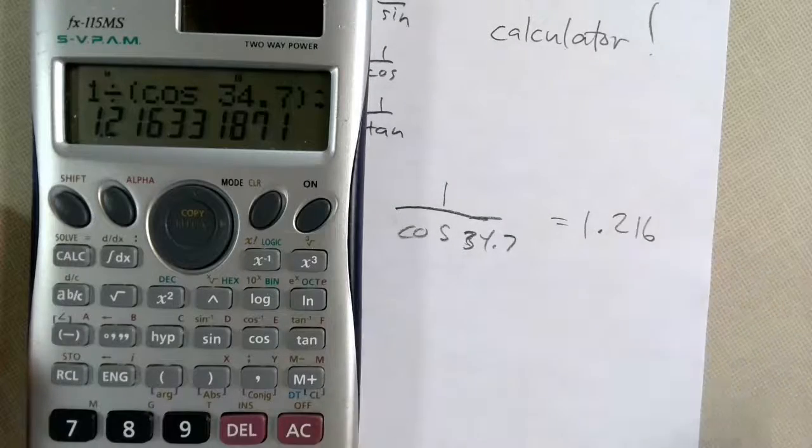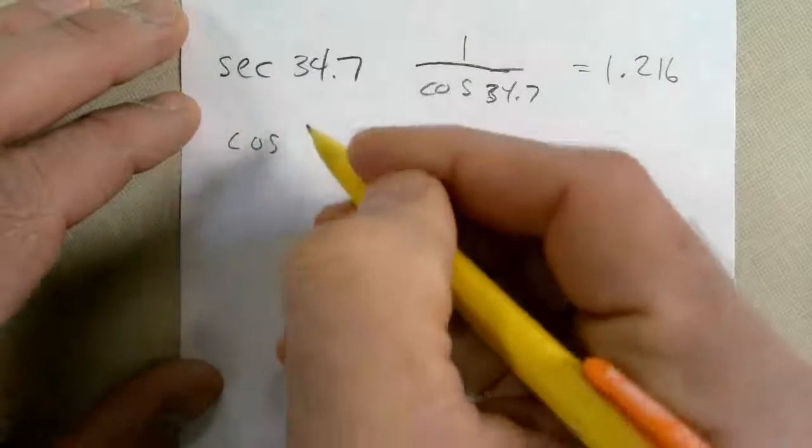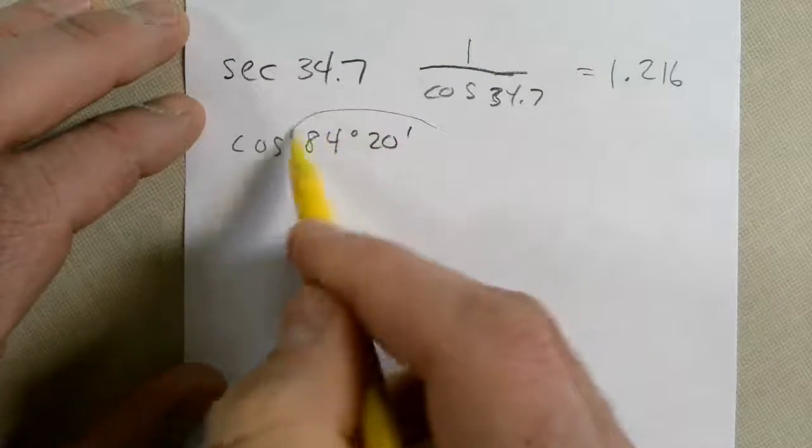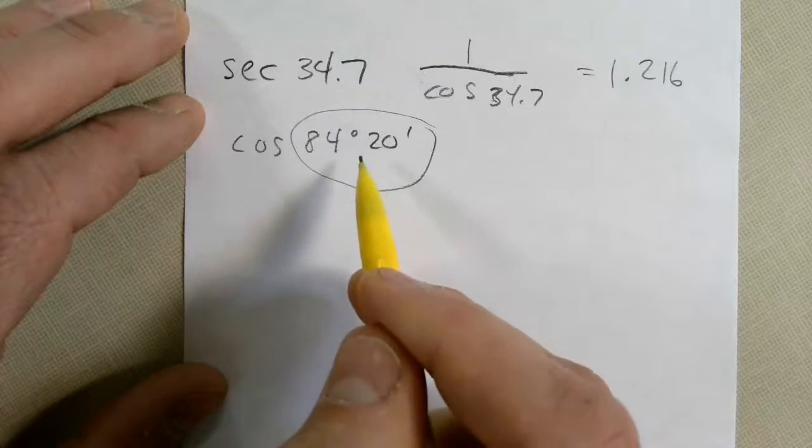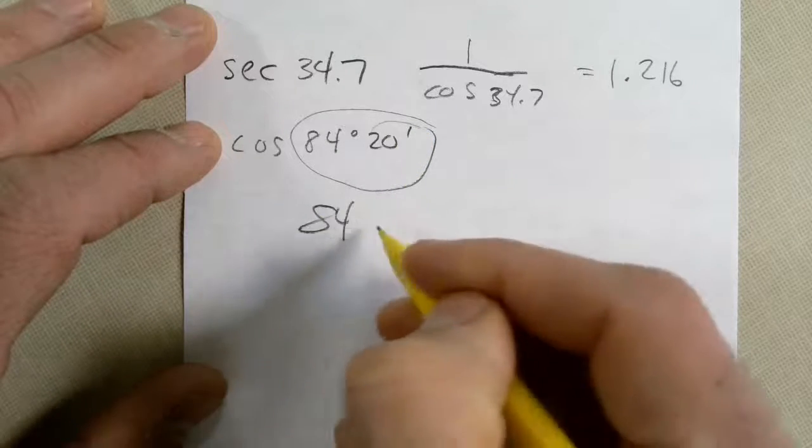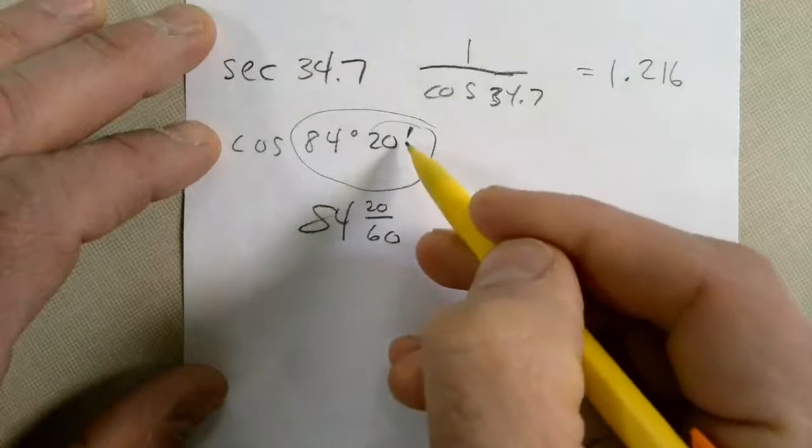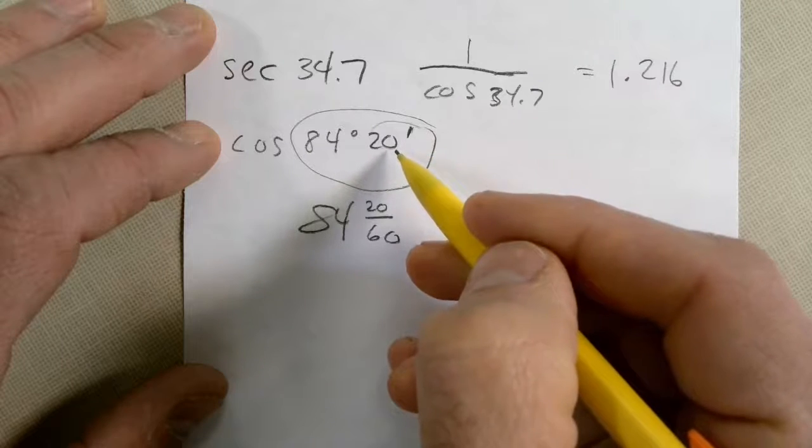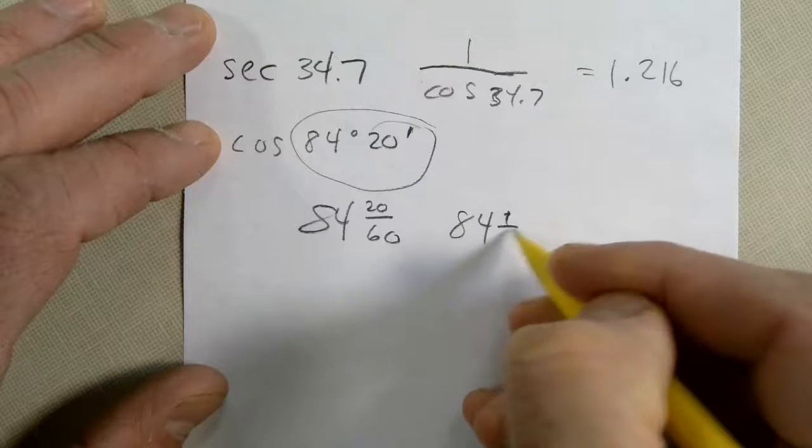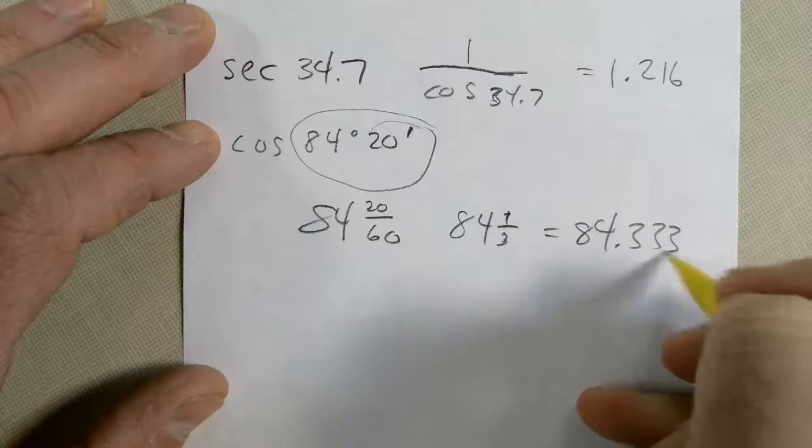So, you're just going to be plugging in numbers. Not too bad. Now, a little complication. What happens if they ask you to give the cosine of 84 degrees in 20 minutes? Well, you'll have to convert this into a decimal first. Remember, this is a fractional number. So, 84 and 20 sixtieths. Because, remember, minutes are 60 minutes to a degree. So, this is 84 and one-third. And you can divide one-third on your calculator and get 84.333333.